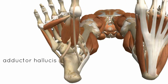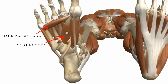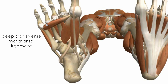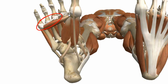Next, the adductor hallucis muscle — just as in the hand, it has a transverse head and an oblique head. The transverse head runs horizontally across the foot, originating on the deep transverse metatarsal ligament and the plantar ligament of the lateral three toes, inserting at the base of the proximal phalanx of the great toe.